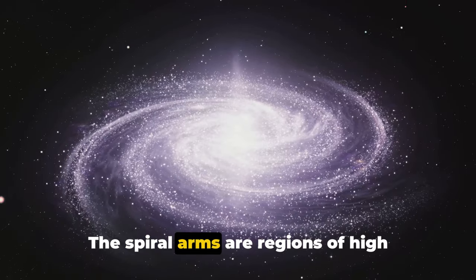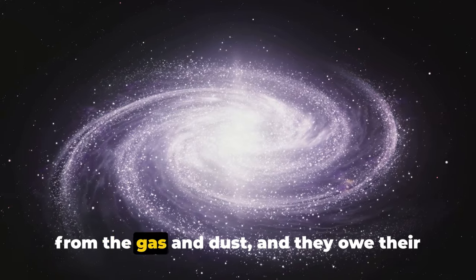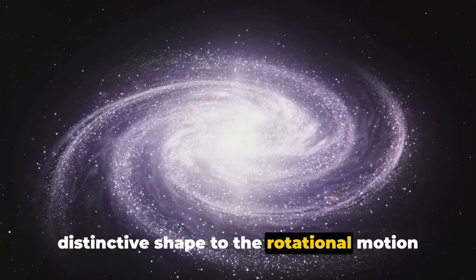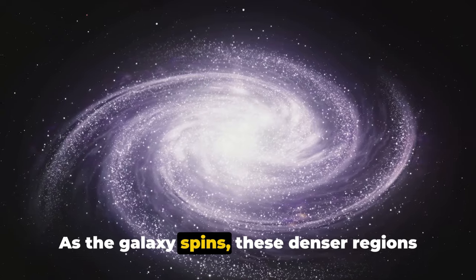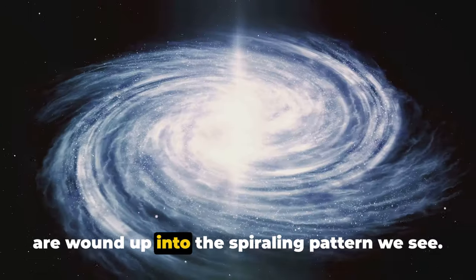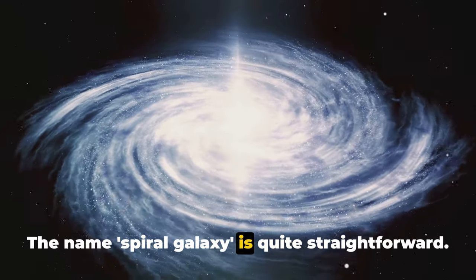The spiral arms are regions of high-density matter where stars are birthed from the gas and dust, and they owe their distinctive shape to the rotational motion of the galaxy. As the galaxy spins, these denser regions are wound up into the spiraling pattern we see.